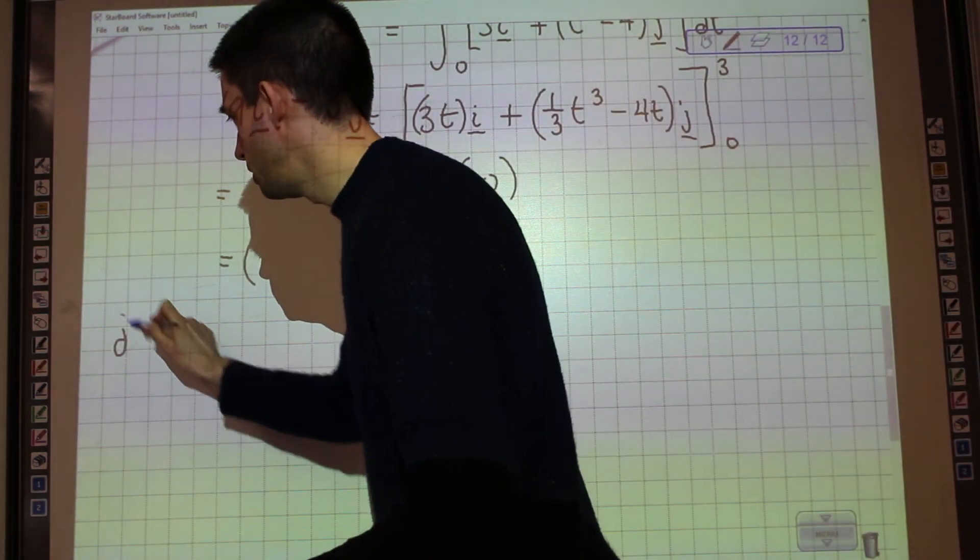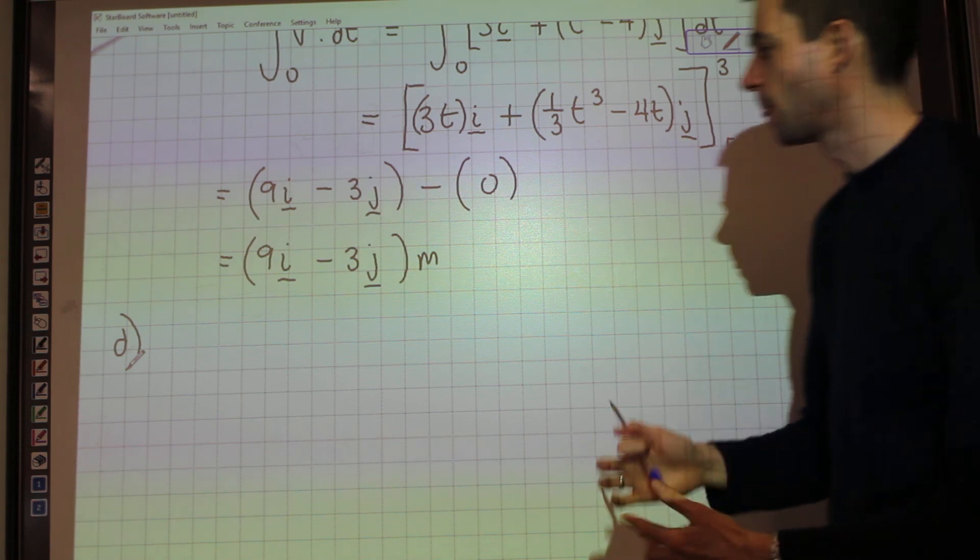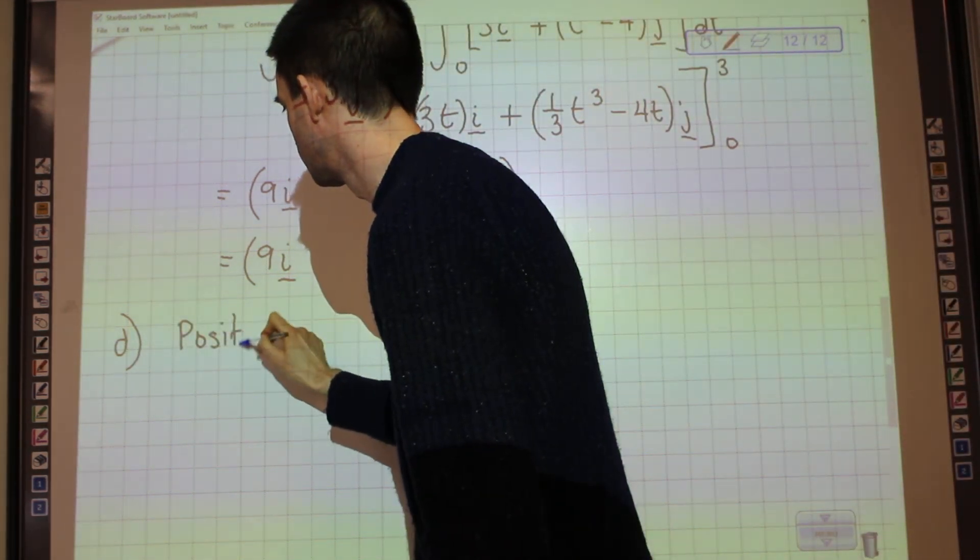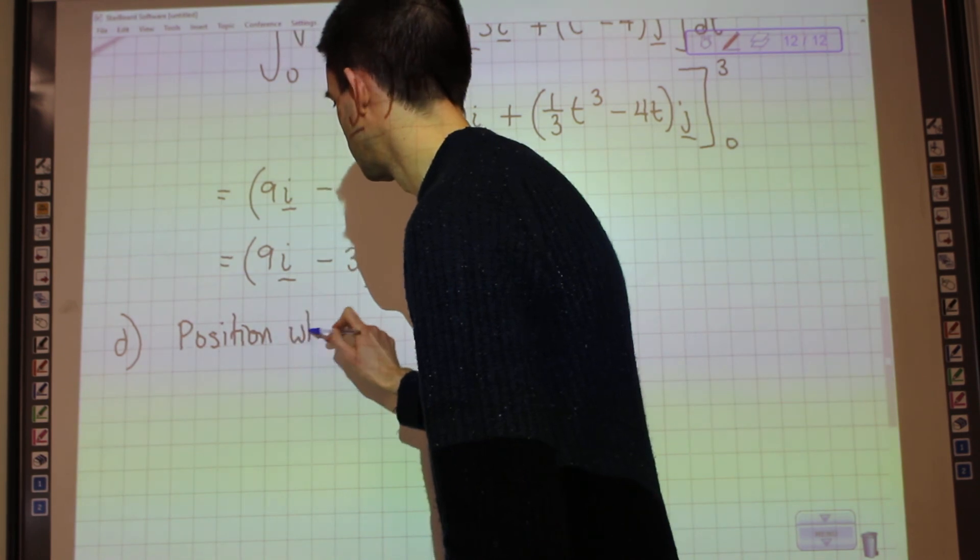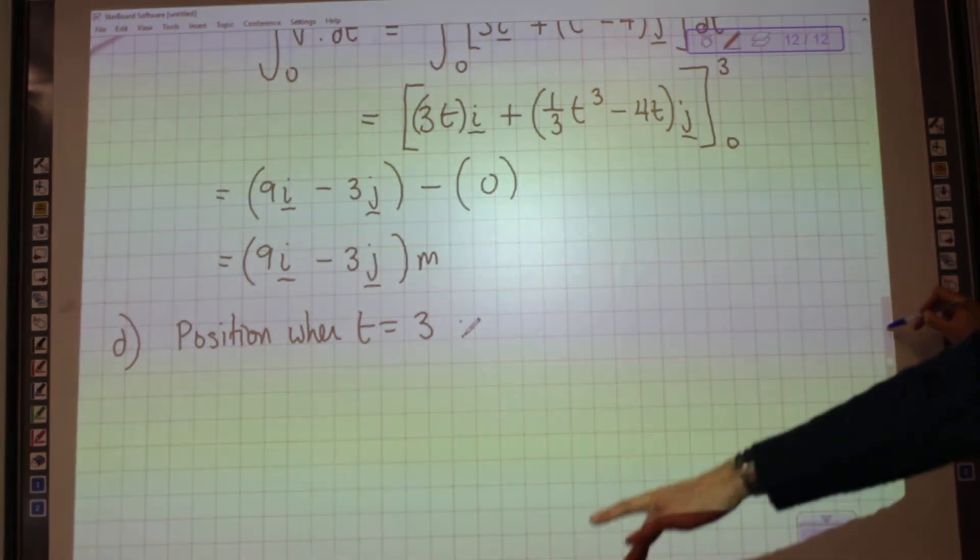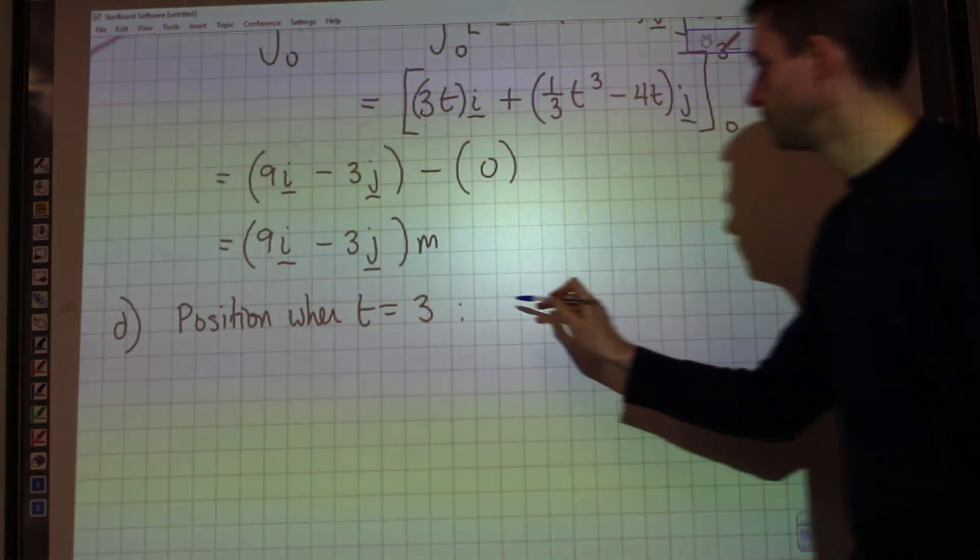So, this is when we do need to use the position of the particle. The whole purpose of this example is to examine, do you understand the difference between position and displacement? So, the position when t equals 3, we worked out in part c to be 10i plus j.